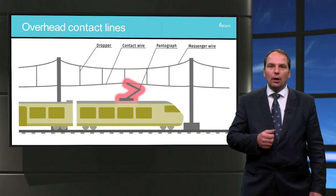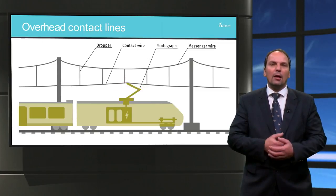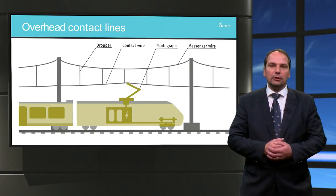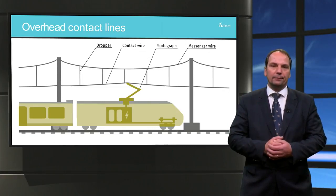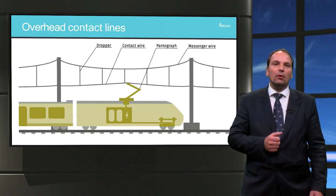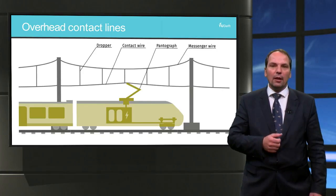The droppers are placed in between to connect both wires. The electrical coupling between the contact wire and the train is achieved using a current collector or pantograph. The reliability of the energy transfer system primarily depends on the quality of the coupling between pantograph and the overhead wire.